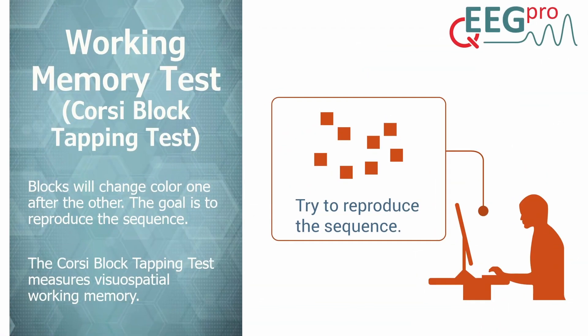Next, we turn to the Corsi Block Tapping Test, which measures working memory. In the Corsi Block Tapping Test, an array of colored blocks is shown on the screen. One by one, the blocks can change color in sequences of increasing length. When a sequence is complete, the subject is instructed to try and reproduce the sequence by clicking on the correct blocks in the correct order. The test starts out with a sequence of only two blocks. When the subject correctly reproduces the sequence at least two out of three trials, the sequence is increased with one block. The sequence with the highest number of blocks that can successfully be reproduced in two out of three trials is called the Corsi span.